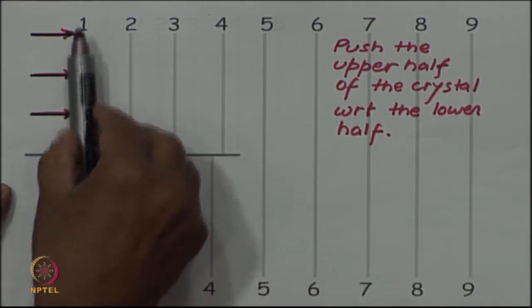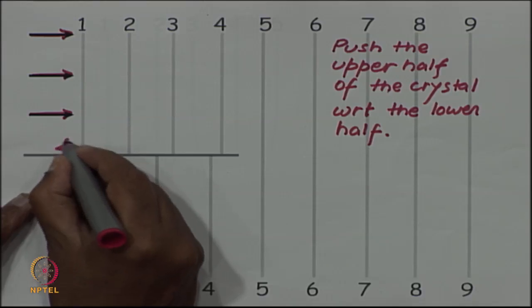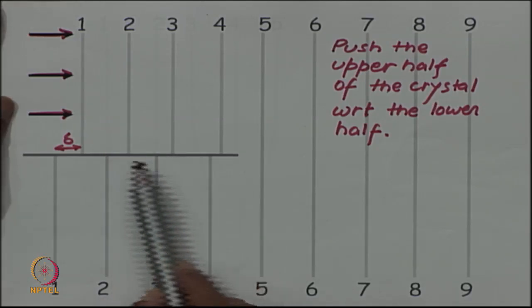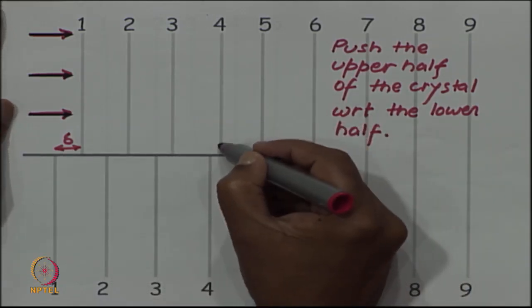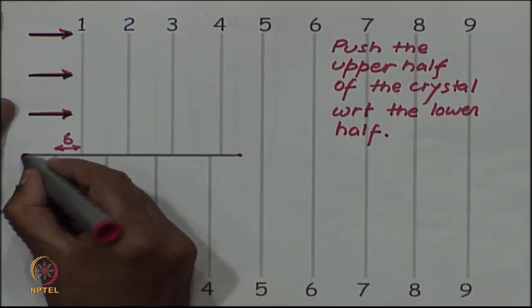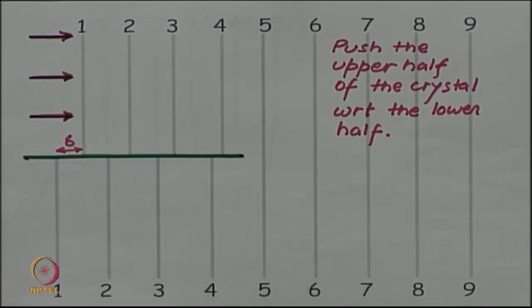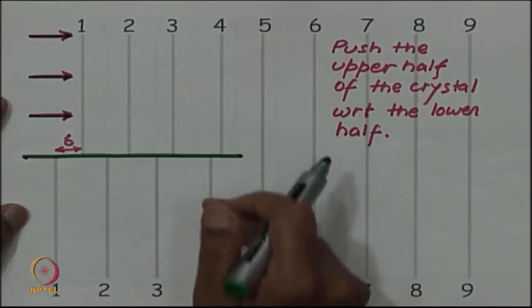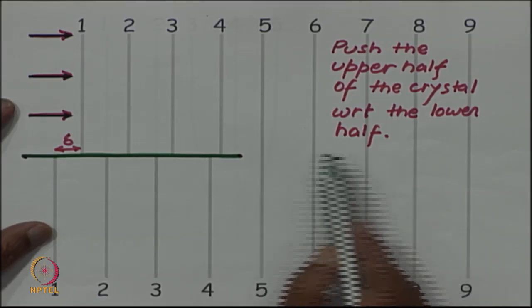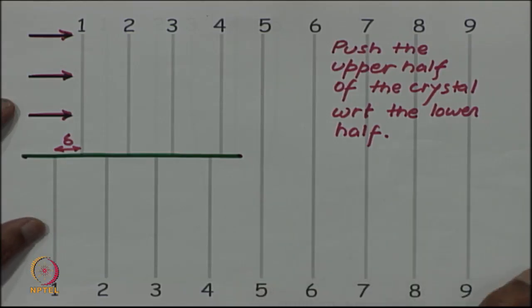You can see that the upper part of the plane one, previously the plane one was continuous, but now the upper half of the plane has moved by some small amount, let us say delta, towards the plane 2. The upper half of the plane 2 has also moved towards plane 3 and so on. The upper half of the plane 4 also moved inwards towards 5, but remember that my cut was only up to 4 planes. My cut plane stopped after the fourth plane. I had not cut the entire crystal into 2 halves. I had run my knife only up to the 4th plane. The fourth plane, the top half of the fourth plane also shifts towards 5, but then beyond 5, 5 and beyond further down I do not have any shift like this because there was no cut.